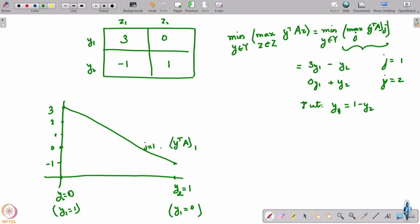Similarly, for j equal to 2. Now j equal to 2, the line will start from 0 and go to 1. So it starts from 0 and ends up at 1. Now, tell me what is the max over j of y transpose A_j, what is this? Yeah, going to be the upper envelope here, just this. This portion is max over j of y transpose A_j.